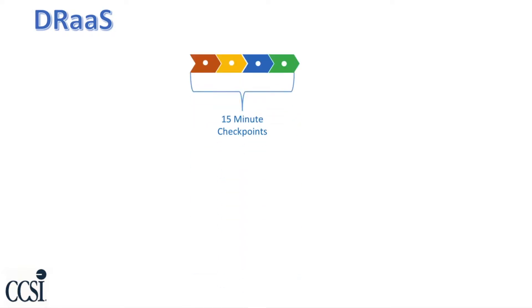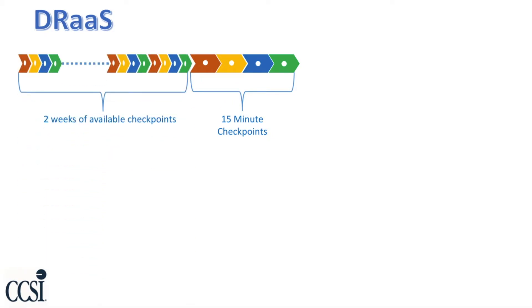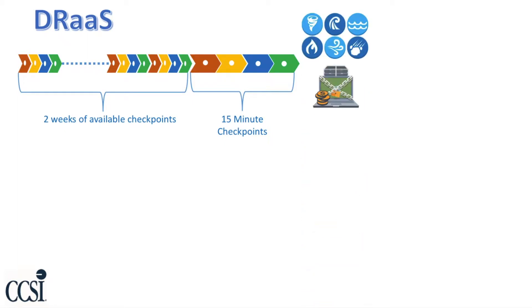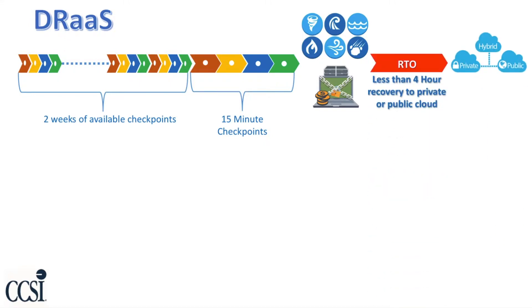Disaster recovery as a service basically offers you a very short RPO, or recovery point objective. This is how much data you're putting at risk, or how often you're doing snapshots. In general, you're going to keep a short amount of these snapshots, maybe two weeks. And in the event of a disaster, a ransomware strike, or a machine failing, you're going to do a recovery.